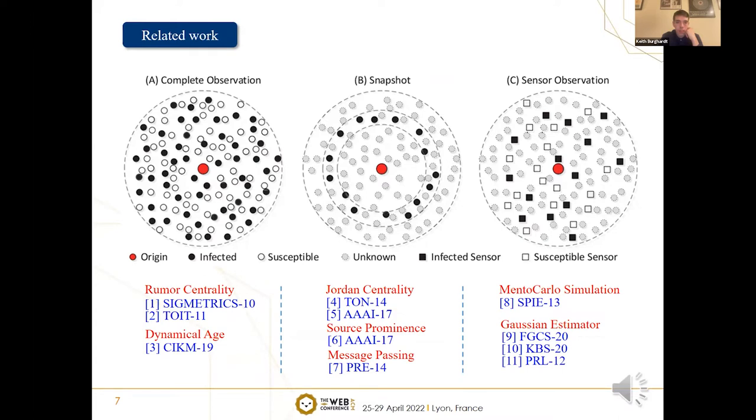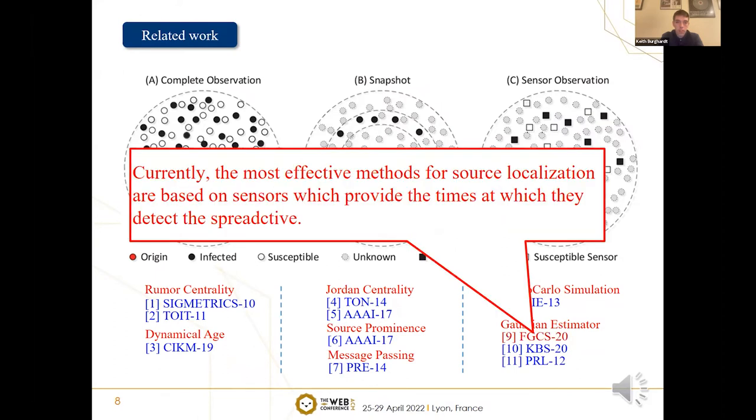In summary, the corresponding methods based on complete observations and snapshot observations are more concerned with the centrality strategy. Only the message-passing methods use a simulation strategy to approach the observed snapshot, while the sensor-based methods focus on Monte Carlo simulation and Gaussian estimation. The reference line has proved that the sensor-based method is more efficient than the methods based on complete and snapshot observations, so our work focuses more on the sensor-based methods.